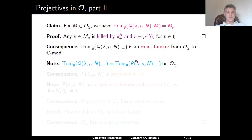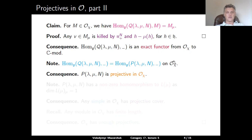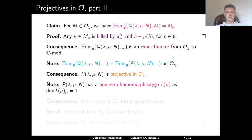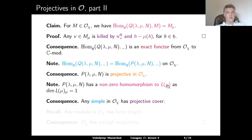Since P(λ,μ,N) is the maximal direct summand of Q(λ,μ,N) belonging to O_χ, the functor Hom from Q is isomorphic to Hom from P on the block O_χ. Consequently P(λ,μ,N) is projective in O_χ. Note that P(λ,μ,N) has a nonzero homomorphism to L(μ) because L(μ) has a one-dimensional μ-weight space. This proves that every simple module in O_χ has a projective cover, since P(λ,μ,N) is projective and surjects onto L(μ), and μ was an arbitrary highest weight appearing in O_χ.